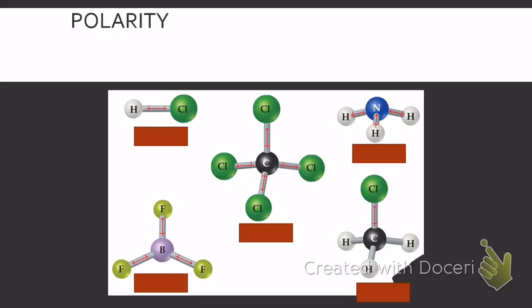So let's just practice. Here's several different molecules. So, for example, if we just start with hydrochloric acid, or hydrogen chloride, chloride is more electronegative than hydrogen, so it will be pulling it more towards the chlorine. So that's why this is polar.